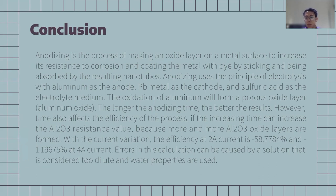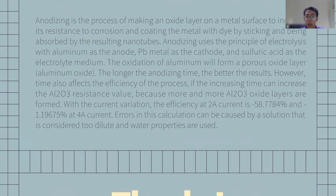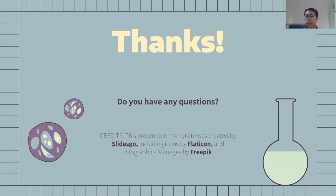With the current variation, the efficiency at 2 ampere current is minus 58.7784% and minus 1.19675% at 4 ampere current. The error in this calculation can be caused by the solution properties considered and the water properties used. That's all from our group — thanks for watching. Do you have any questions? If so, you can chat us. Thank you.